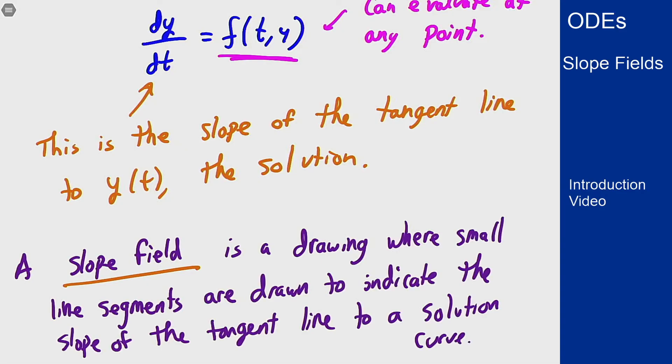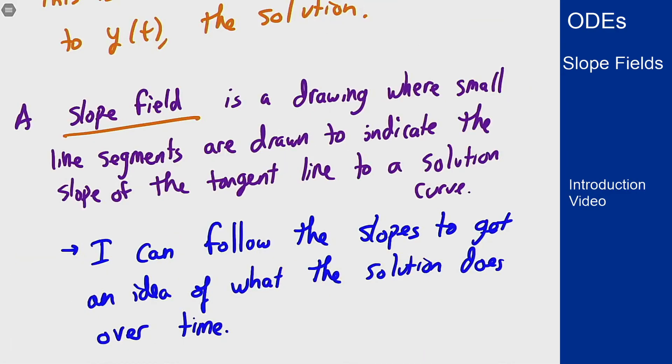And the main idea here is if I have a picture that has the slope everywhere I can use it to trace out what the curve should do over a range of values just following the slopes of these lines. This gives us a decent way to picture and look at what the solution should do over time just based on what the differential equation looks like and what the function f does at certain points.